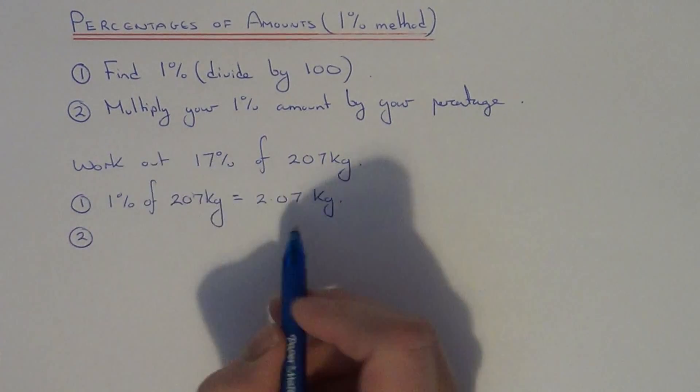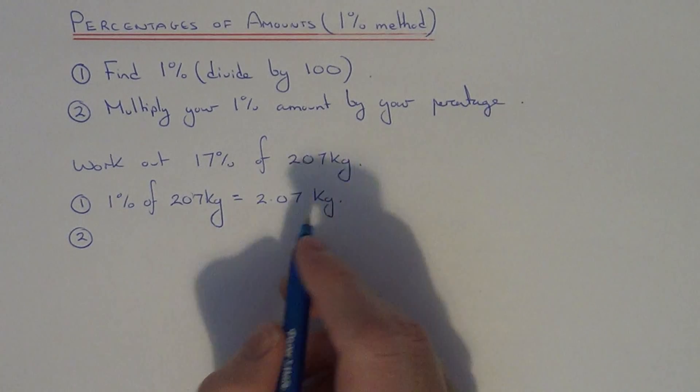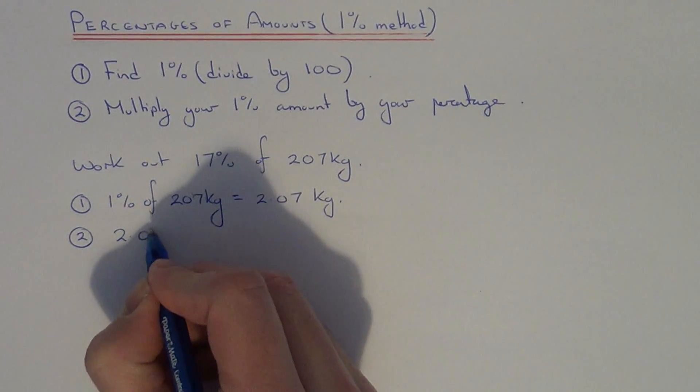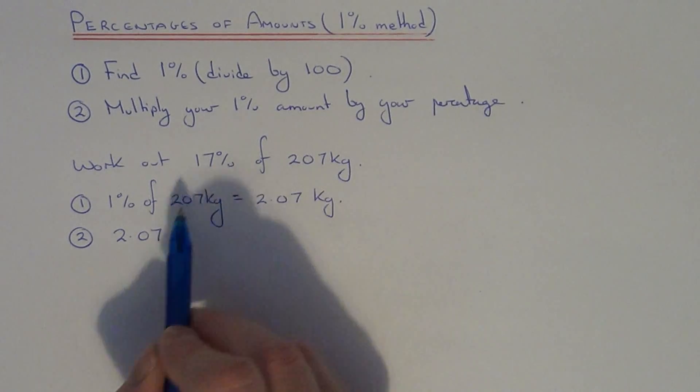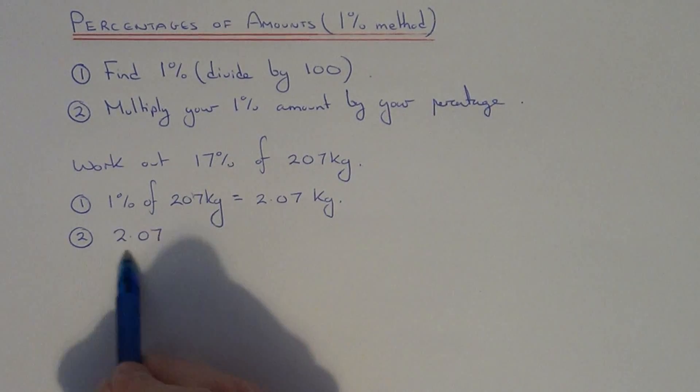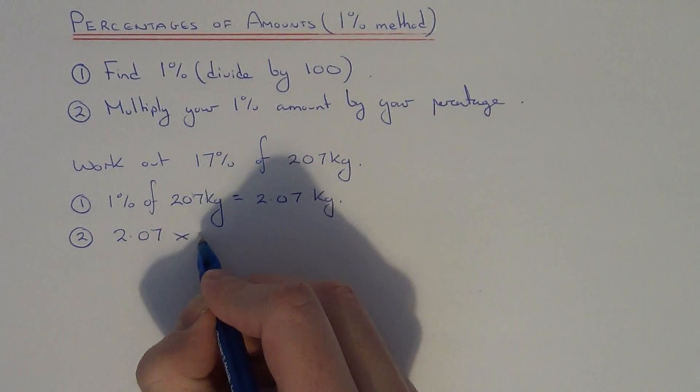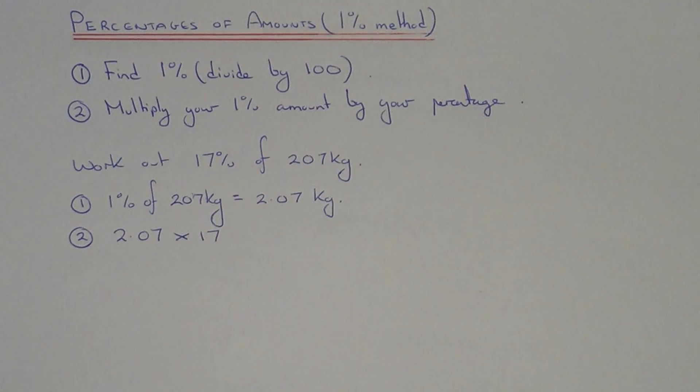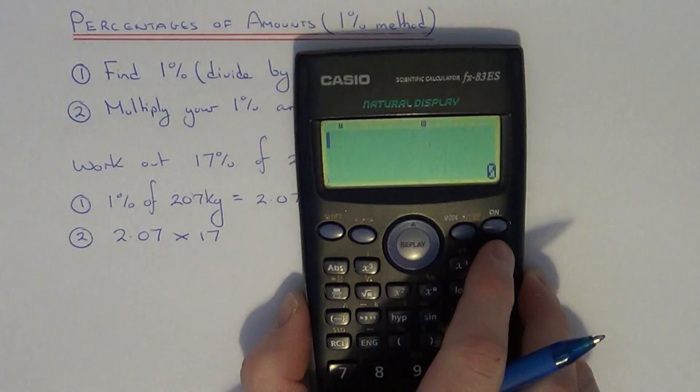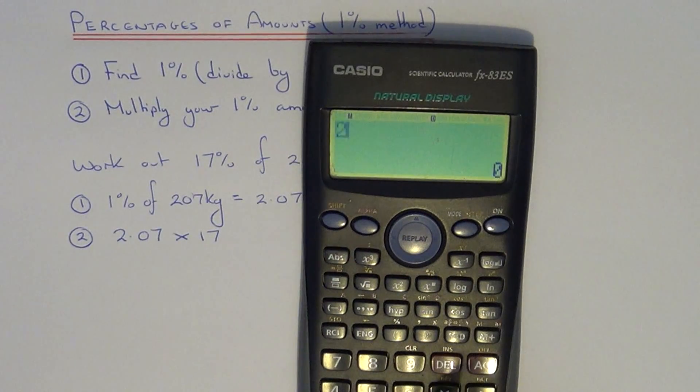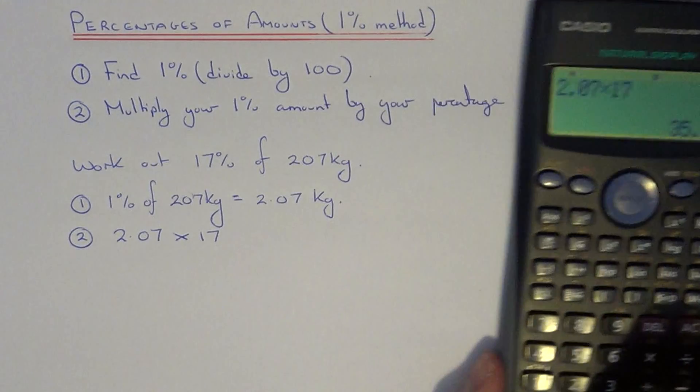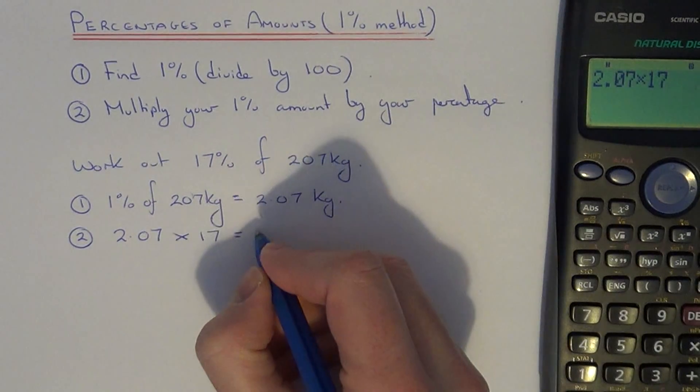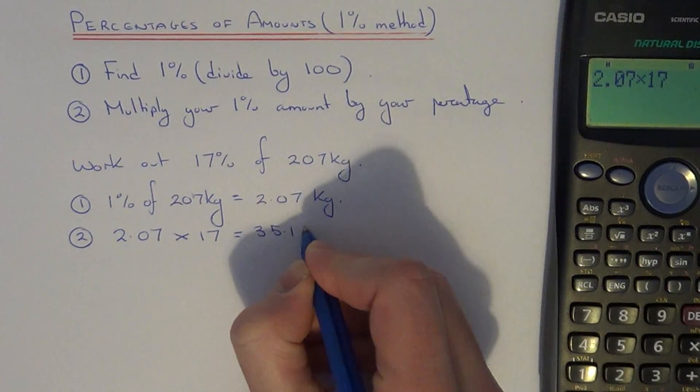Step 2, once you have 1%, all you need to do now is multiply this by the percentage. Since we need 17%, we need 17 of these 1%, so we multiply it by 17. If you've got a calculator, just do 2.07 times 17, and this will give us an answer of 35.19kg.